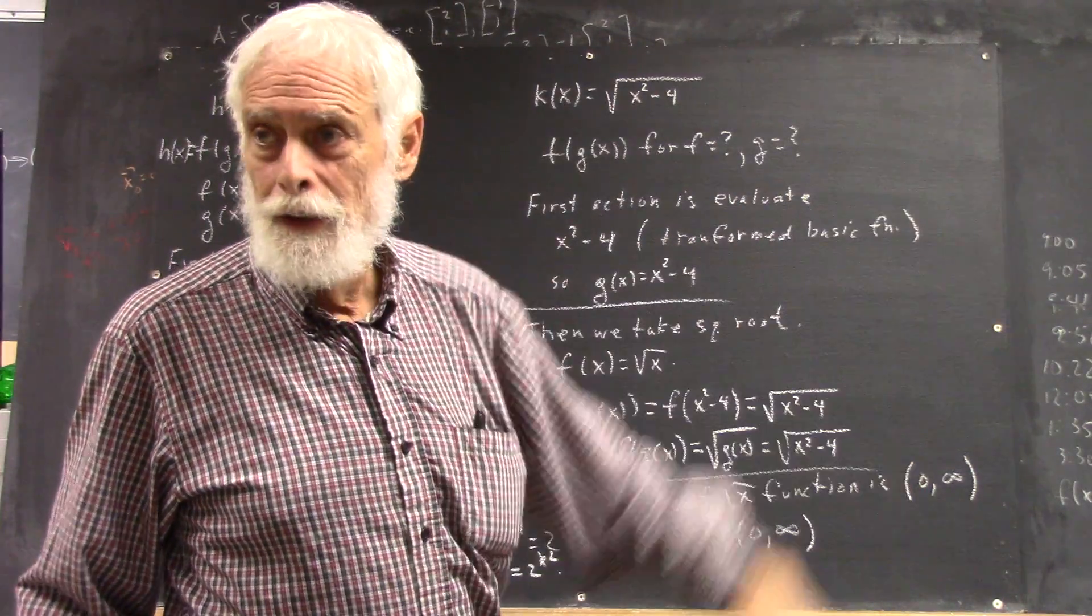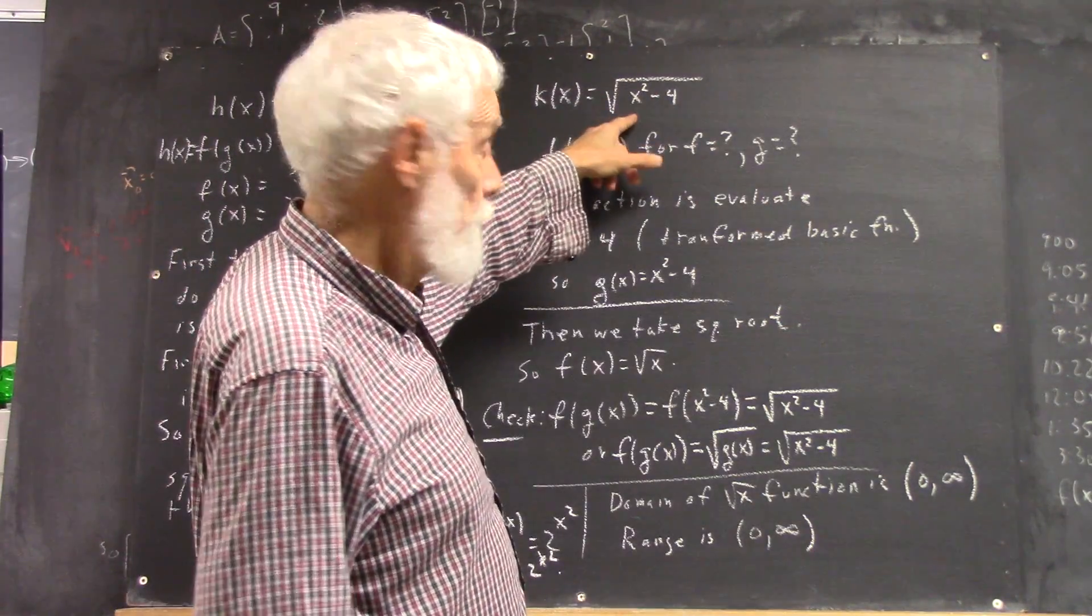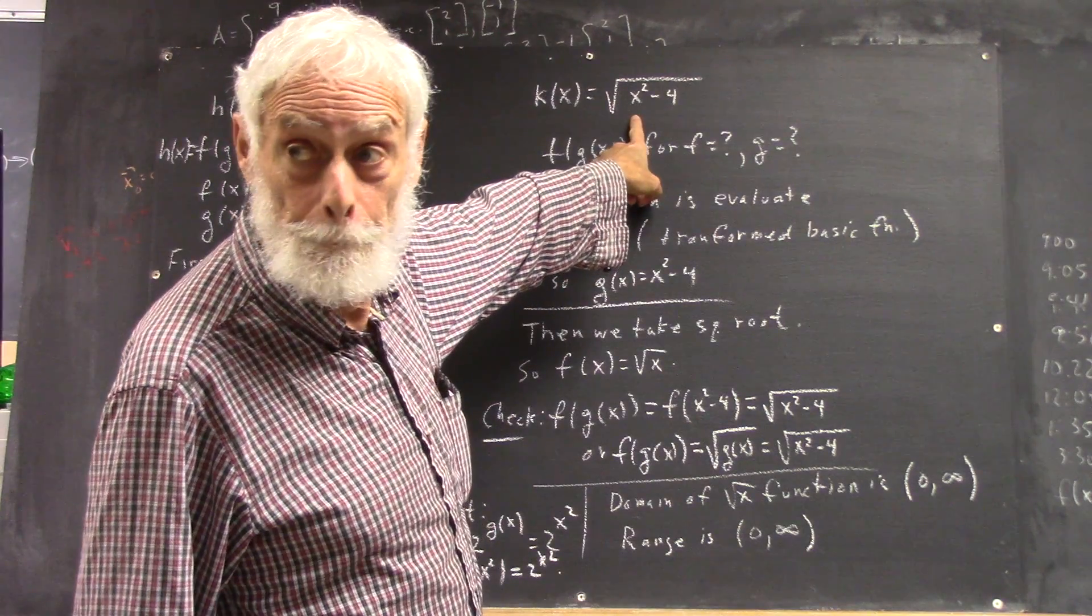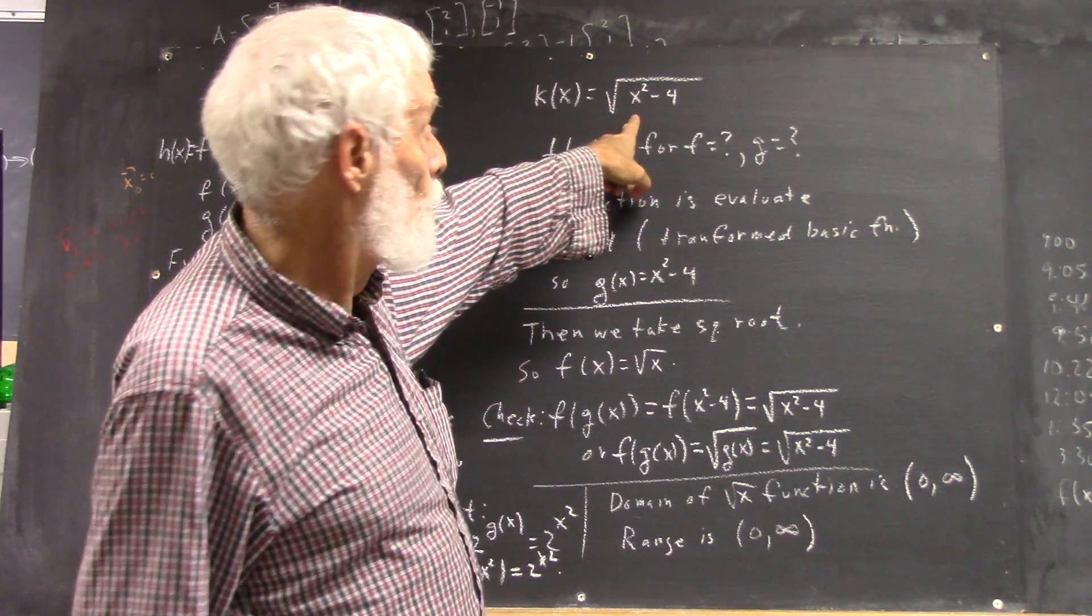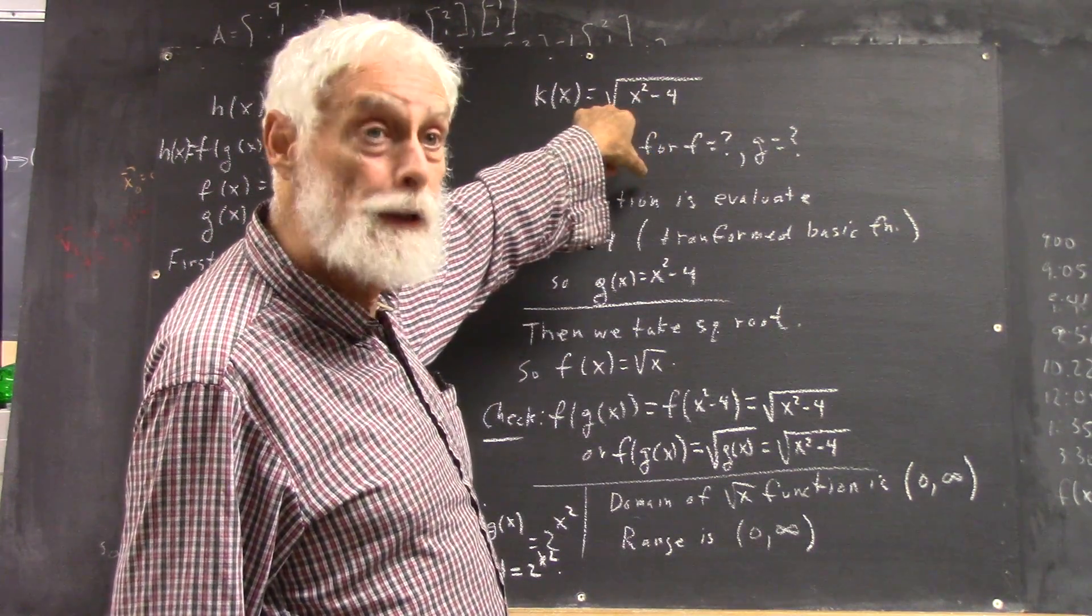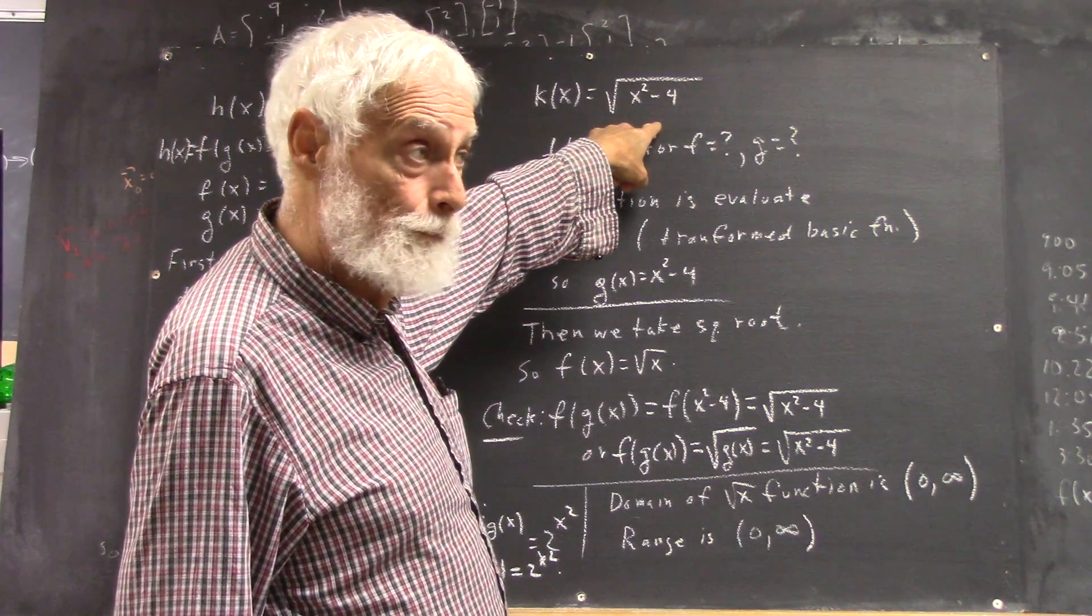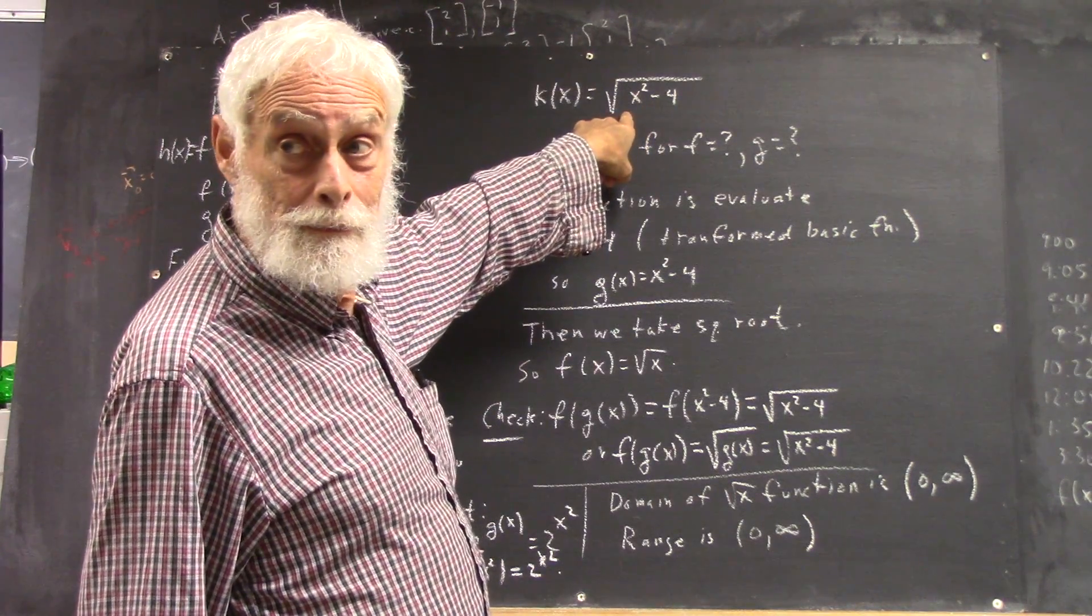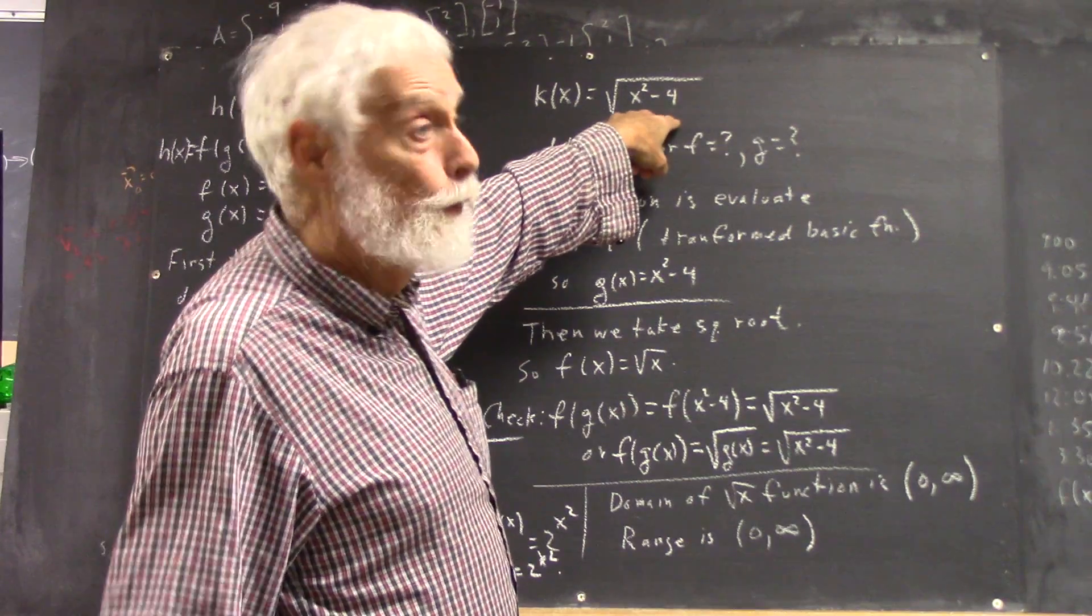When I ask the class, give me a number that won't work here, somebody immediately said 1. Because 1 squared minus 4 is negative 3, you can't do the square root of negative 3. You can't use 0 because you'd get the square root of negative 4.